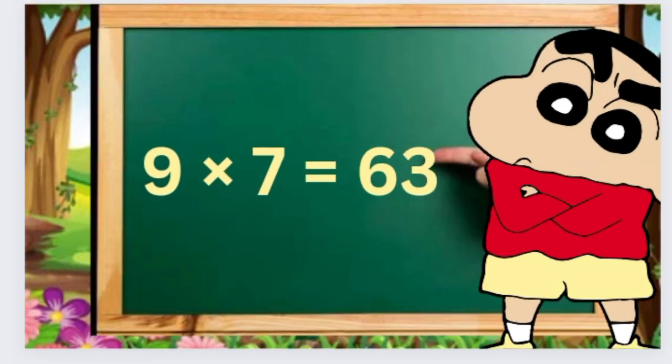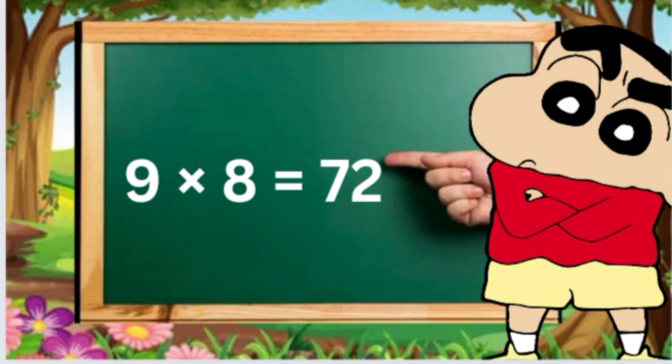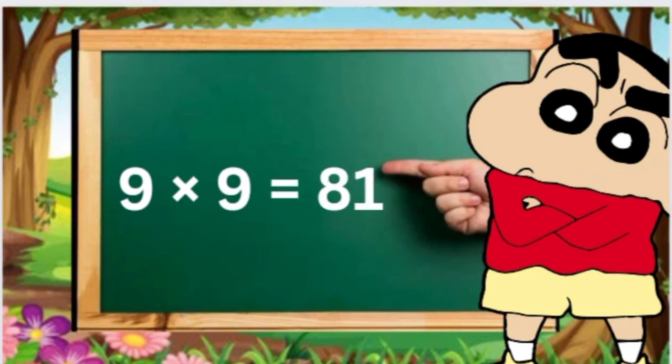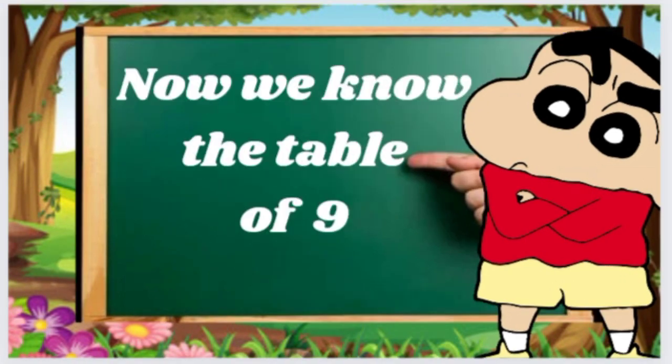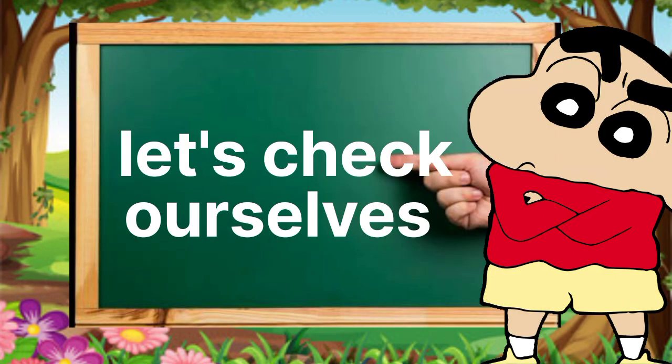Nine sevens are sixty-three, nine eights are seventy-two, nine nines are eighty-one, nine tens are ninety. Now we know the table of nine. Let's check ourselves.